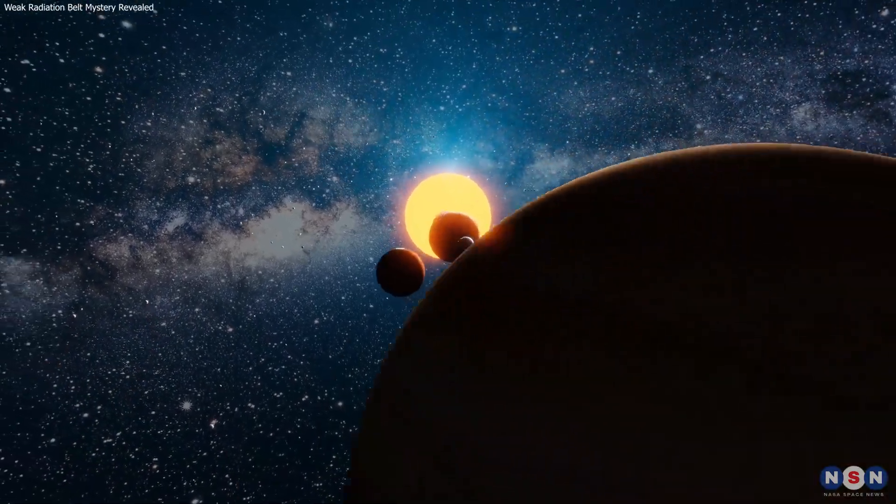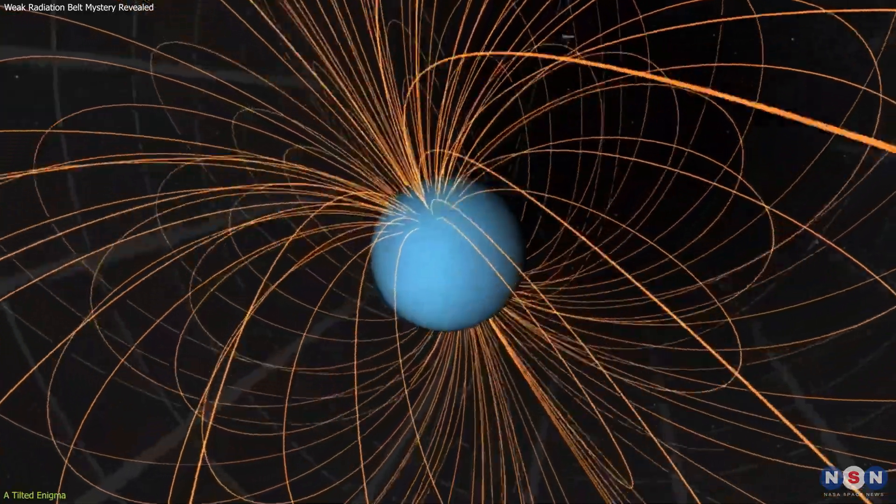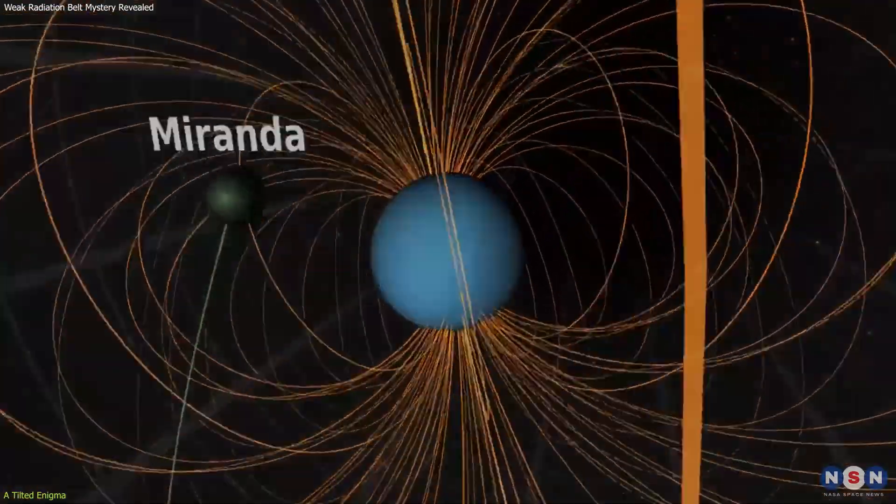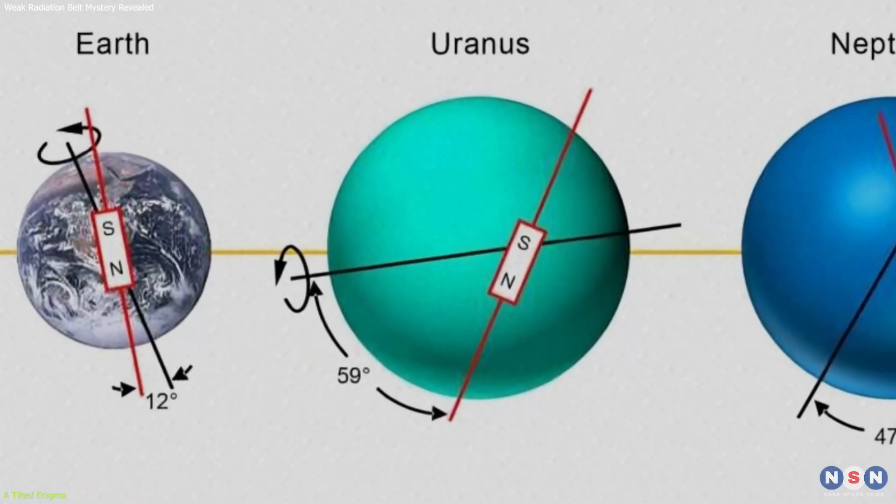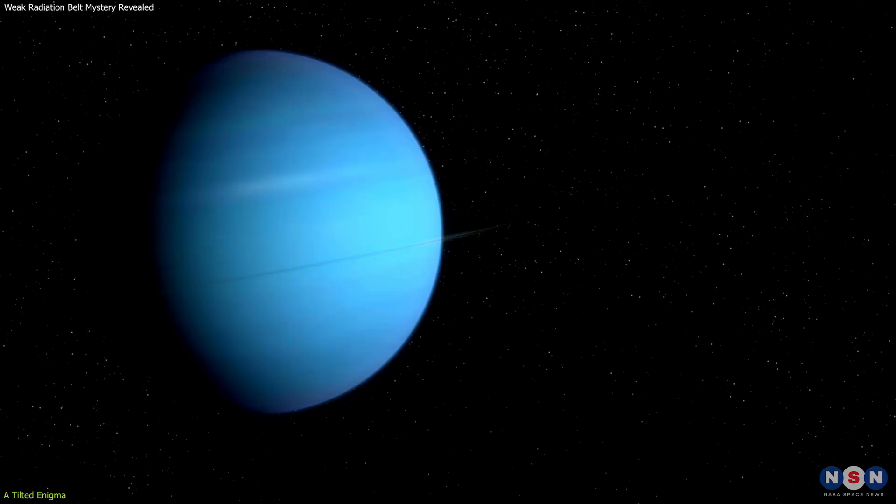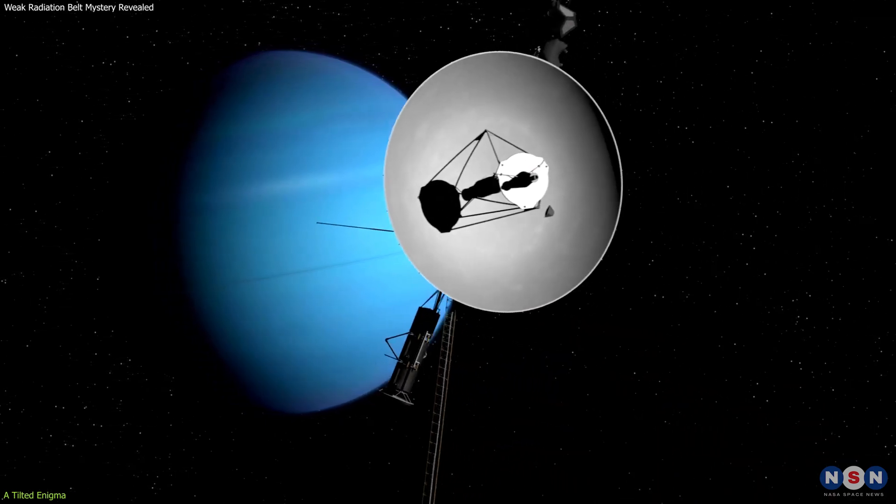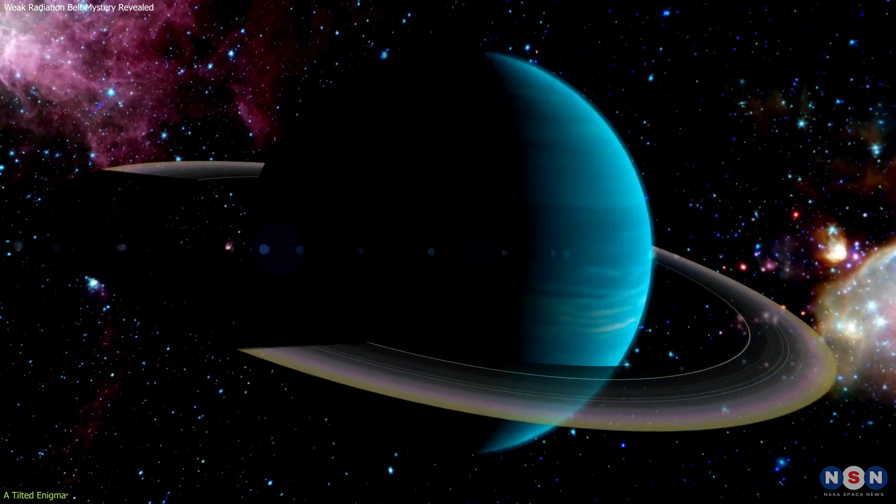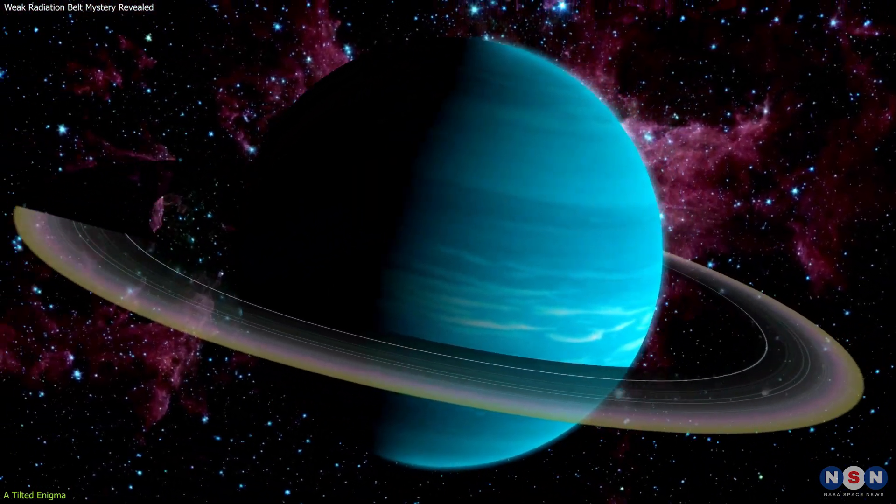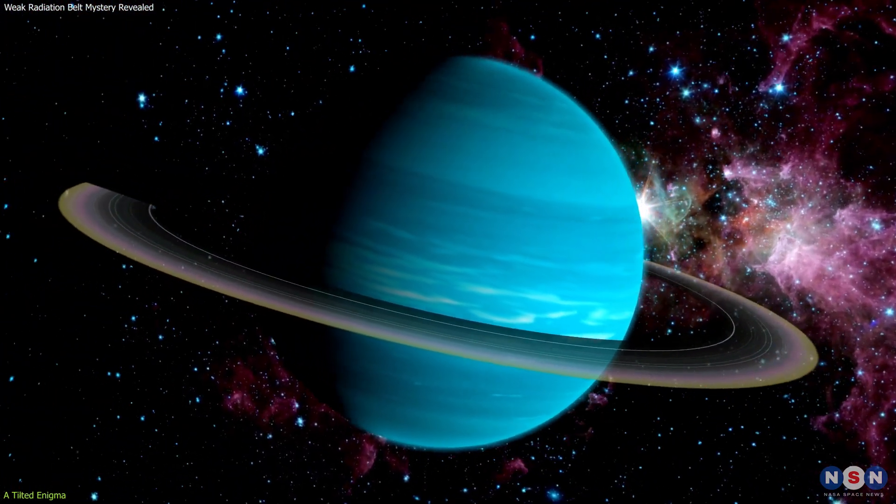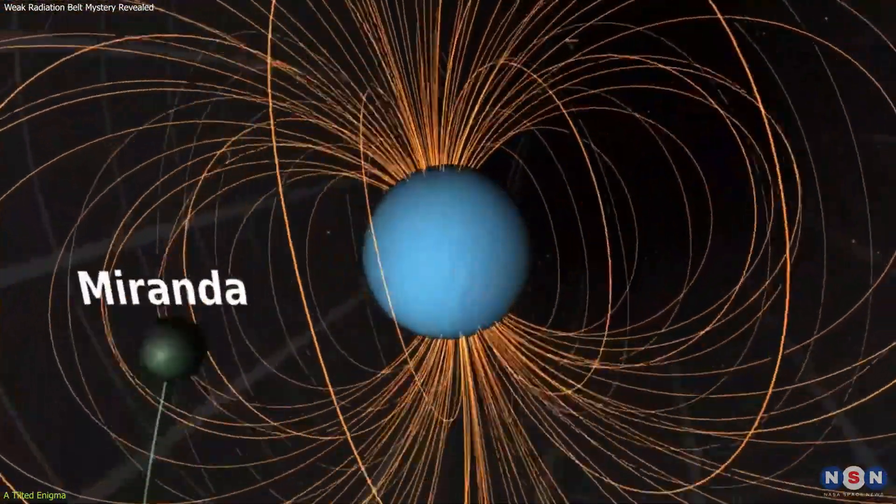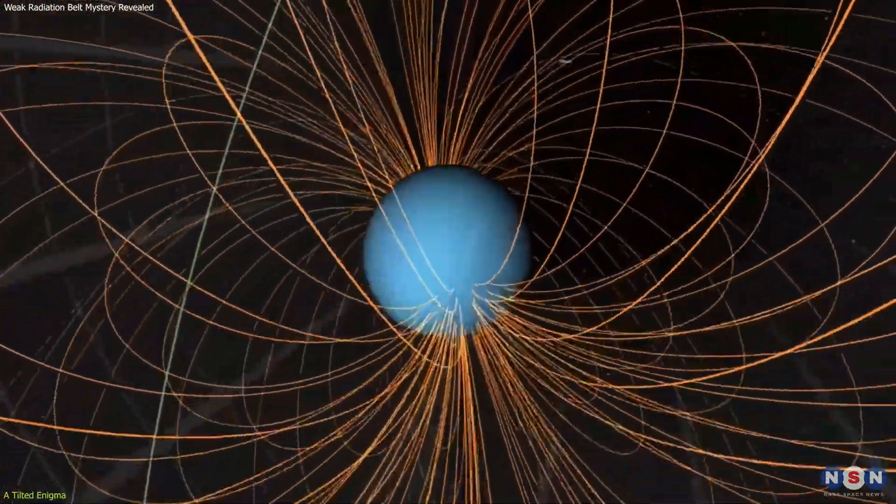Unlike most planets in our solar system, Uranus boasts a magnetic field that's dramatically tilted, about 60 degrees away from its axis of rotation. This discovery, first made by the Voyager 2 spacecraft during its 1986 flyby, hinted at an inner world far more complex than previously imagined. The tilt results in an asymmetric magnetic field, a rare trait among the planets we know.